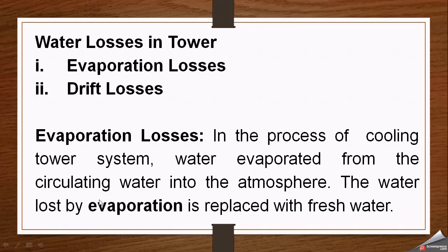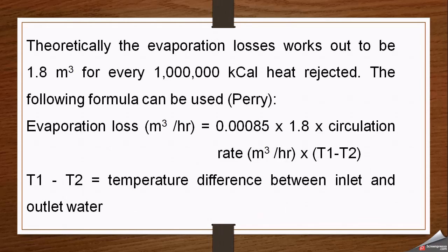The water lost by evaporation is replaced with fresh water, since losses go out to the atmosphere and must be made up with fresh water. Theoretically, evaporation losses work out to be 1.8 cubic meters for every 1 million kilocalories of heat rejected. The formula normally used to calculate evaporation losses is applied where T1 and T2 represent the temperature difference between the inlet and outlet water of the tower.